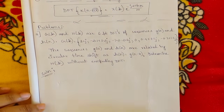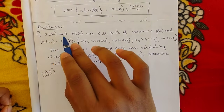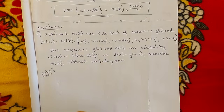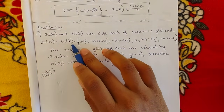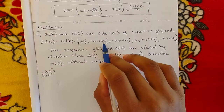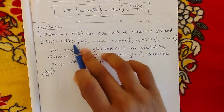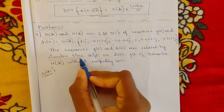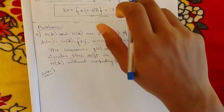Let us now analyze one problem. The question states that two sequences G(k) and H(k) are six-point DFTs of sequences g(n) and h(n). G(k) is given as the six-point DFT with values: 1+j, 2−2.1+3.2j, −1.2−2.4j, 0.9+3.1j, −0.3+1.1j. The sequences g(n) and h(n) are related by circular time shift, as mentioned in the question, so we should use this property to solve it.